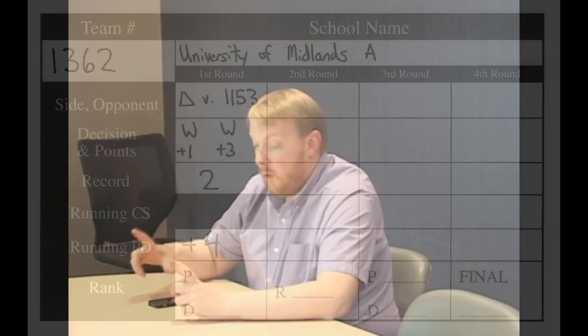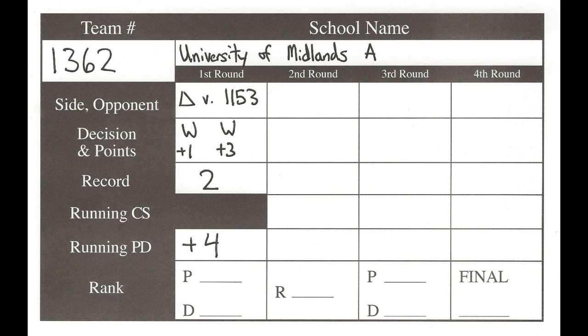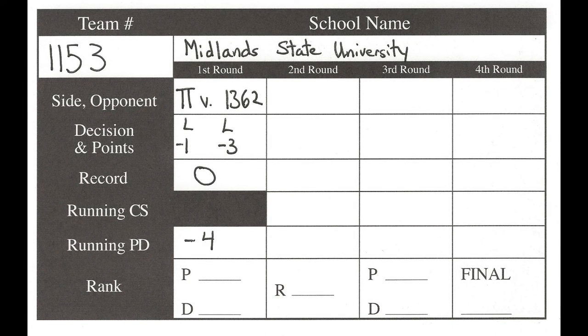As ballots are tabulated, the two AMTA representatives each write the records and results on a pre-printed four-by-six card for each team. Then they cross-check their cards with one another to make sure results have been recorded accurately. For example, if one representative's card shows team A with a point differential of plus 15 but the other shows plus 13, that discrepancy sends them back to the original blue ballots to find the error.